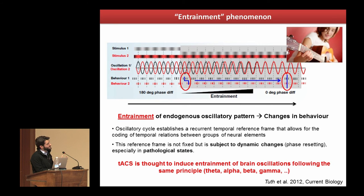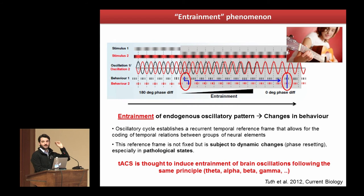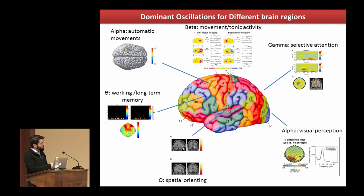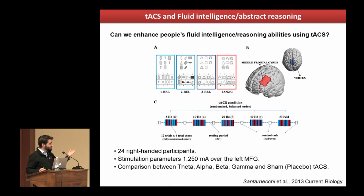The mechanisms are not really clear, but I suggest reading a very nice review on the topic that explains why this approach can work. We know more or less which frequencies are dominant in different brain regions, so now we can apply stimulation to try to modulate something like fluid intelligence. We did this in 2013 when we published a paper about the modulation of fluid intelligence with TACS. We had a hypothesis about a dominant role of the left middle frontal gyrus during an abstract reasoning task.